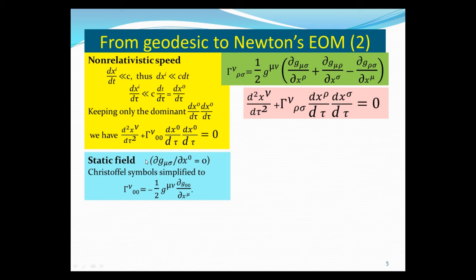The second condition in Newton's limit is that the gravitational field is static, meaning the metric for the gravitational field has no time dependence — partial derivatives with respect to time equal zero. So for the Christoffel symbol with the zero-zero component (rho equals zero, sigma equals zero), the terms with time derivatives vanish, leaving only the last term. The Christoffel symbol with nu-zero-zero component can then be written simply as that remaining term.